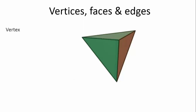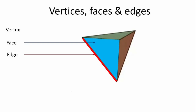So we have a vertex, we have a face, and we have an edge. These are the three most important parts of a 3D shape. Your edge is the line where two faces meet — here is a red edge. A face is a flat surface, a 2D flat surface surrounded by edges. And a vertex is simply the point of a shape.